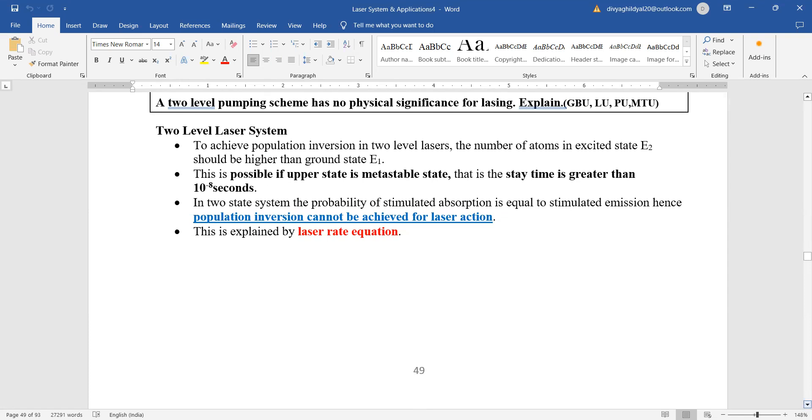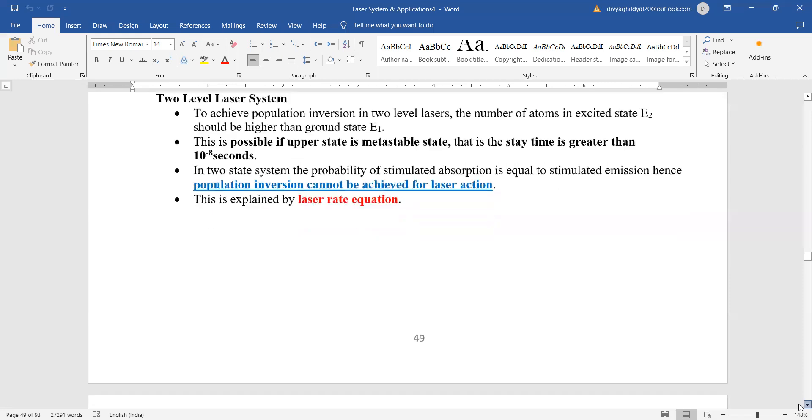The essential requirements for laser action are metastable state, population inversion, and optical cavity setup. When we are having two levels, it is not possible to achieve laser light as metastable state is missing from this.